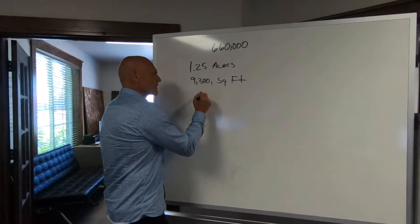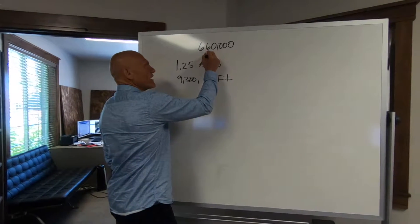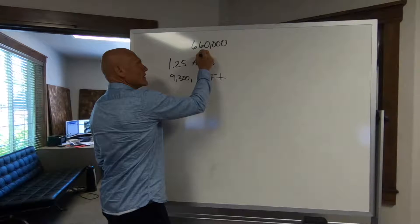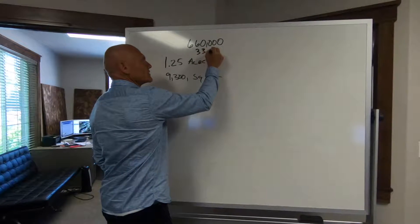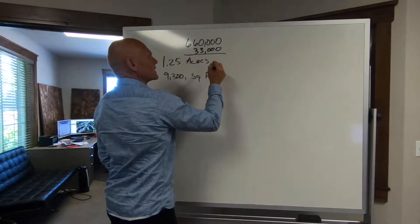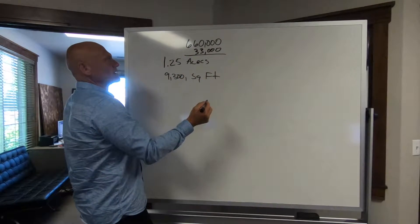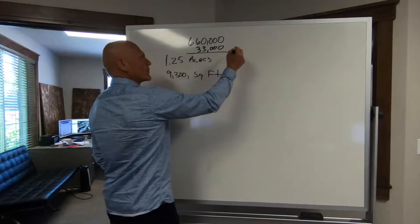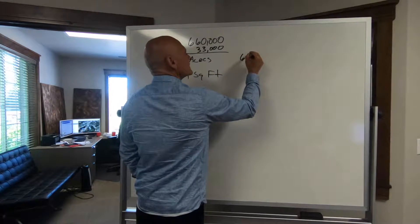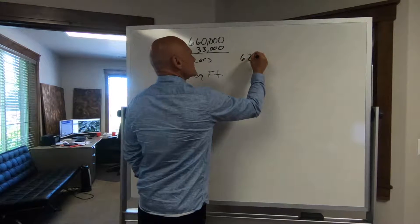So what this loan is going to be, it started out to be $660,000, five points, which would be roughly $33,000. We're going to lend him the difference of that to put in his pocket, which would be $627,000.